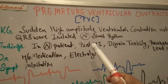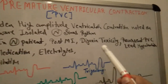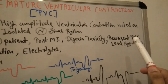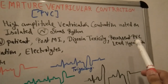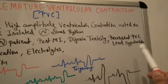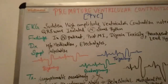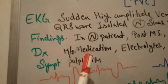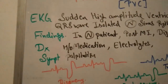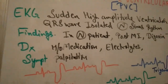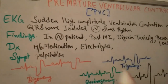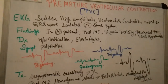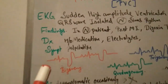We see PVCs in post-MI patients on ECG. Also, a patient taking digoxin may develop toxicity, causing recurrent premature ventricular contractions leading to hypotension. We diagnose by taking medication history — digoxin, electrolyte abnormalities, and various other medicines can cause premature ventricular contractions.